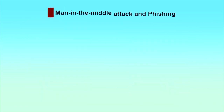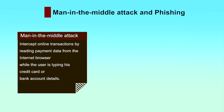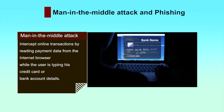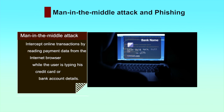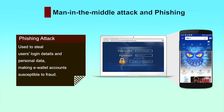The second threat to e-wallets is man-in-the-middle attack and phishing. Sophisticated threats like man-in-the-browser or man-in-the-middle attacks intercept online transactions by reading payment data from the internet browser while the user is typing his credit card or bank account details. Phishing attacks are used to steal users' login details and personal data, making e-wallet accounts susceptible to fraud.